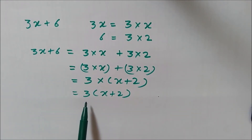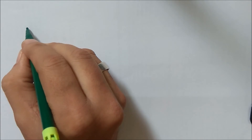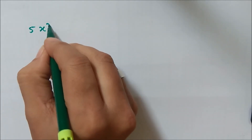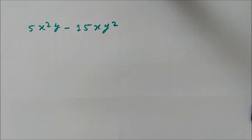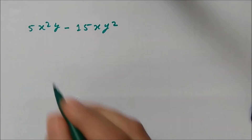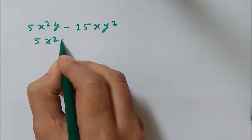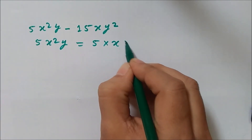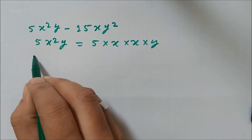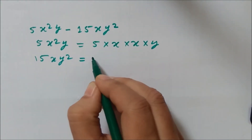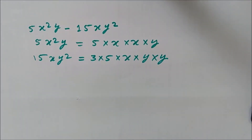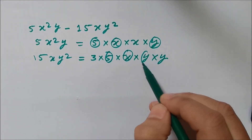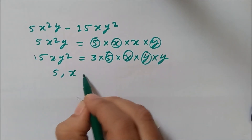So the factors of 3x plus 6 are 3 and x plus 2. Let us look at a more difficult expression: 5x squared y minus 15xy squared. If we express each term in the form of irreducible factors, we find that 5x squared y can be written as 5 into x into x into y. Similarly, 15xy squared can be written as 3 into 5 into x into y into y. Now look at the common factors: 5 is common, x is common, and y is common. So the common factors are 5, x, and y.